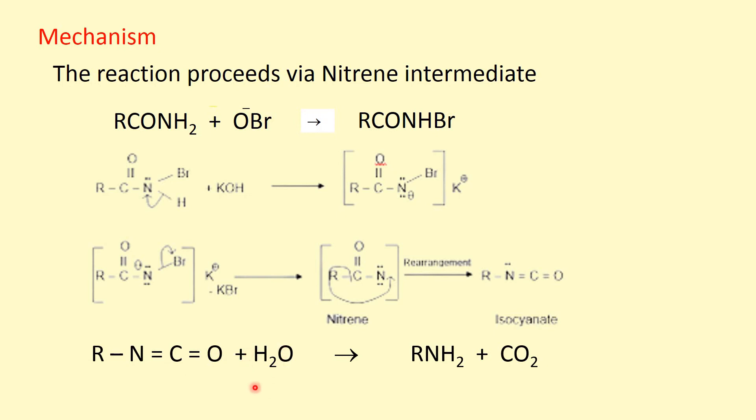This isocyanate on hydrolysis produces the primary amine along with the evolution of carbon dioxide. So this is the Hofmann rearrangement reaction whereby the primary amine is formed, and during rearrangement the alkyl or aryl group shifts from the carbon to the nitrogen atom. The final product contains one carbon atom less than that of the substrate — hence it is a degradation reaction.